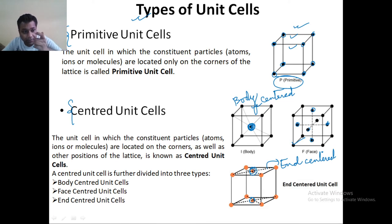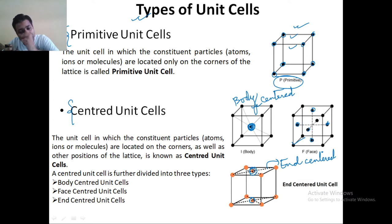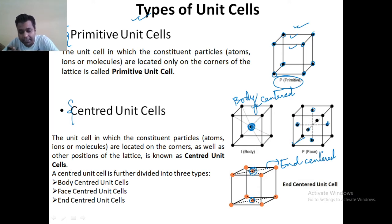For an example, if I say that NaCl is having a primitive unit cell, so if you take NaCl anywhere or any sample, you will have the primitive unit cell only. It is unique for each and every matter to exist in a particular kind of unit cell.